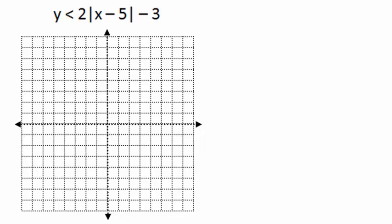Alright, to graph and shade this inequality, we should end up with the V graph. I know this because this is an absolute value function. Absolute value has a V and so does its graph.